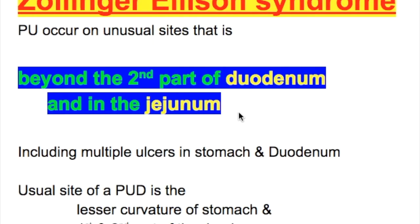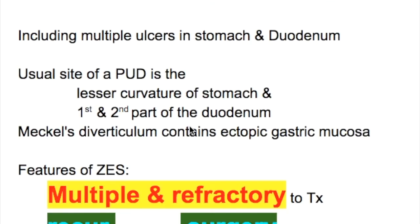What is Zollinger-Ellison syndrome? Peptic ulcers occur on unusual sites — that is, beyond the second part of the duodenum and in the jejunum as well, including multiple ulcers in the stomach and duodenum. The usual site of peptic ulcer disease is the lesser curvature of the stomach and the first and second part of the duodenum. Meckel's diverticulum can also contain ectopic gastric mucosa, so ulcers may occur there too.